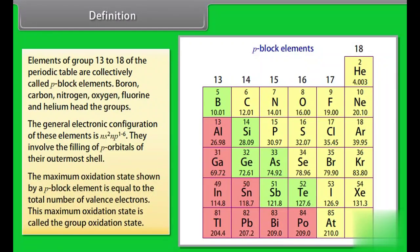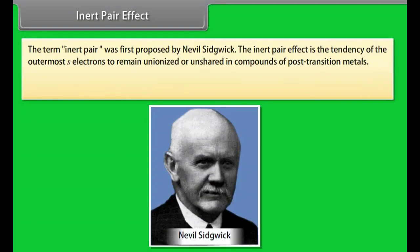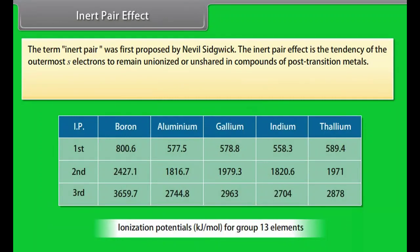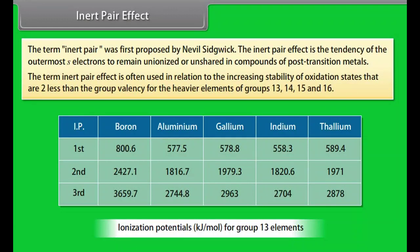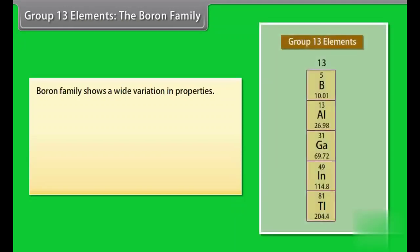Inert pair effect. The term inert pair was first proposed by Neville Sidgwick. The inert pair effect is the tendency of the outermost s-electrons to remain unionized or unshared in compounds of post-transition metals. The term inert pair effect is often used in relation to the increasing stability of oxidation states that are 2 less than the group valency for the heavier elements of groups 13, 14, 15 and 16.